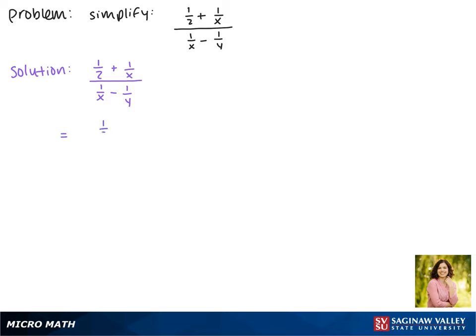So here we have a 2 and an x. We want to multiply the 1 half by x over x and multiply the 1 over x by 2 over 2. This way both of the denominators will be 2x.